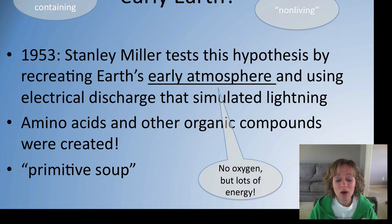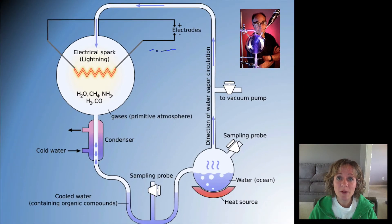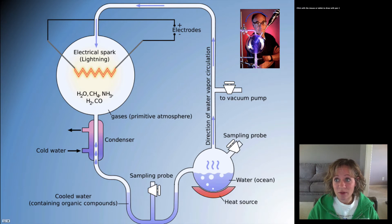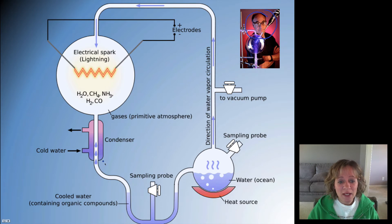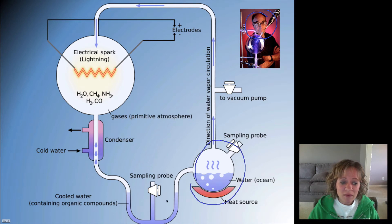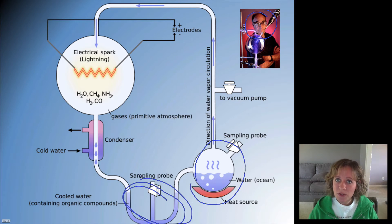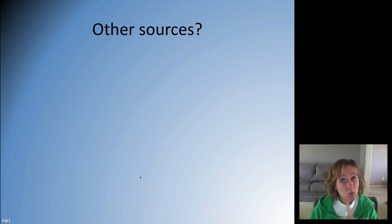This was huge. This primitive soup of amino acids and other organic compounds is now named after this discovery. Here is Stanley Miller and his experiment — an early abiotic atmosphere, an electrical discharge, gases — he put in an electrical spark, then condensed it, and got out this primitive soup of amino acids and other organic compounds. That's one hypothesis, but there are several.